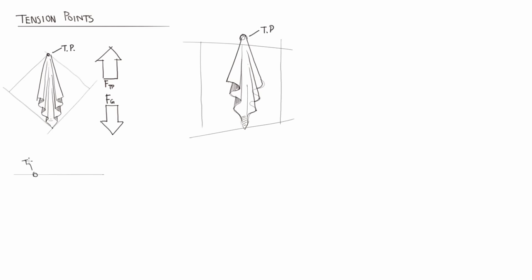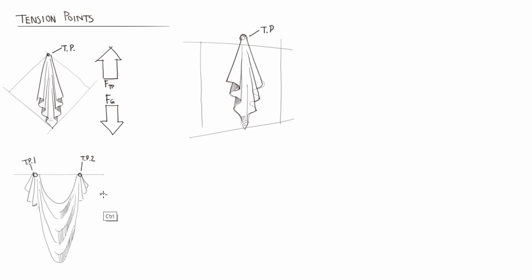Adding a second point of tension creates what is referred to as a diaper fold. Rather than a series of half-cylinders, this situation creates a series of U-shaped curves that become steeper in slope as they descend. Also notice that the diaper fold is bounded by two pipe folds on either side.